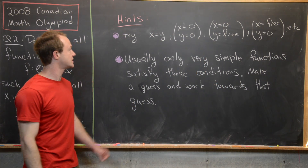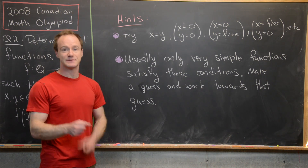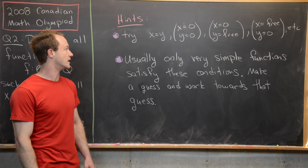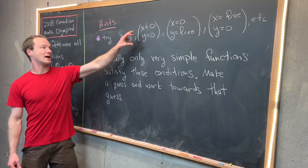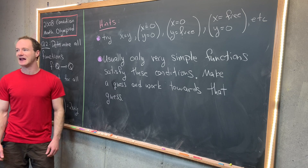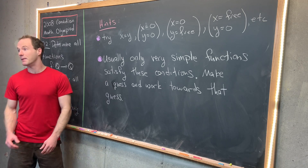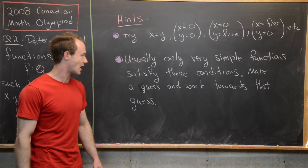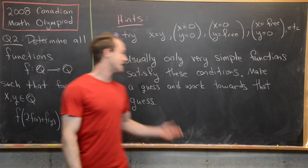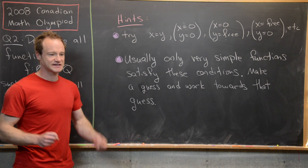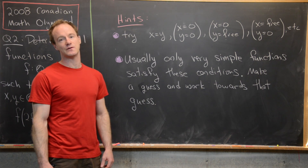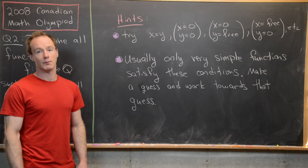Let's look at some hints before we look at our solution. The first hint goes for all types of functional equations: pick some special values of x and y that might create a simpler functional equation to work with. In other words, try x equals y, try both equal to zero, or try one equal to zero with the other free, and see what functional equation you get. The second hint is that usually only very simple functions satisfy these conditions, so you can guess a very simple solution and then work towards showing that your guess is really the only type of function that satisfies the given functional equation.